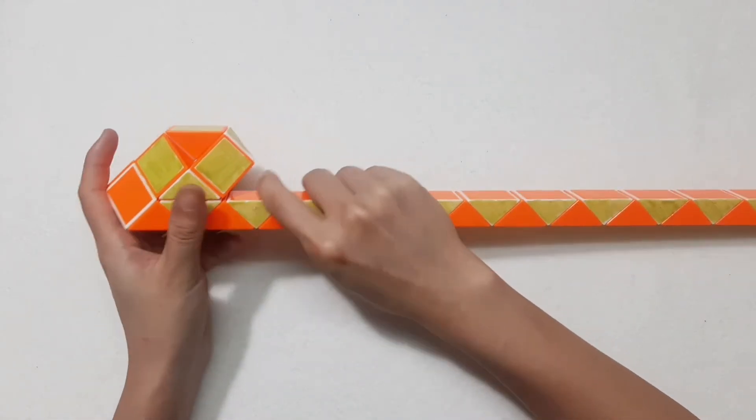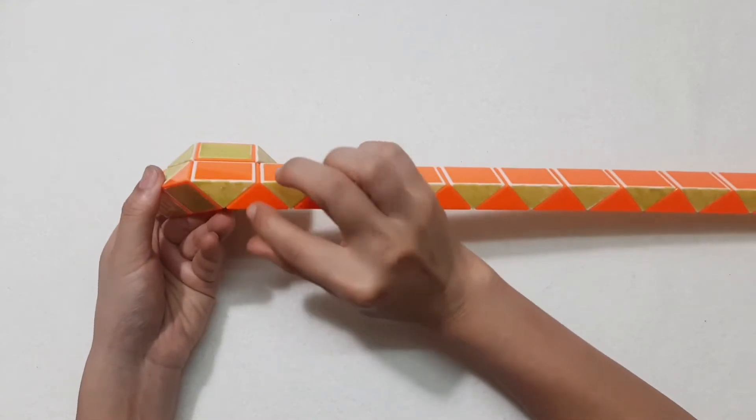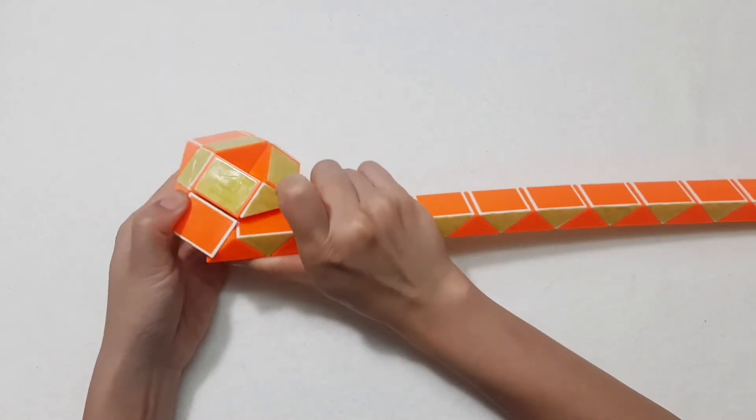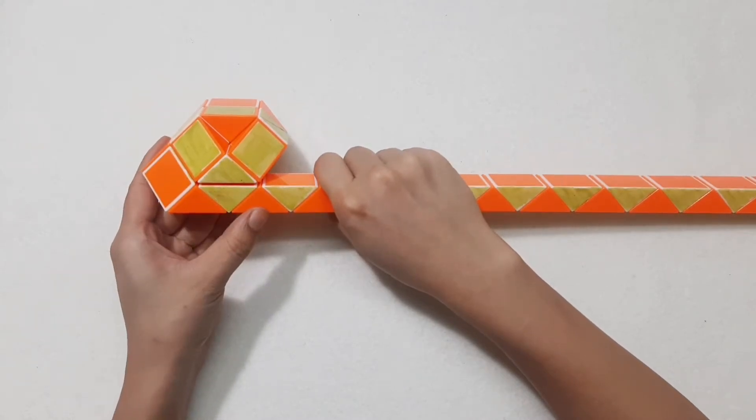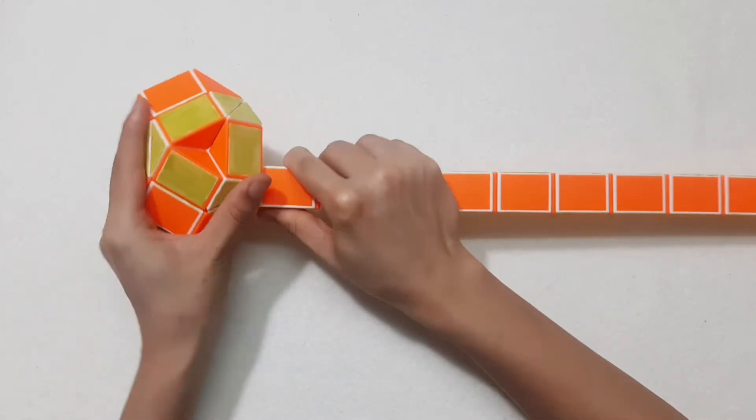1, 2, 3, 4, go up. And then go down. 1, 2, 3, go to the left.